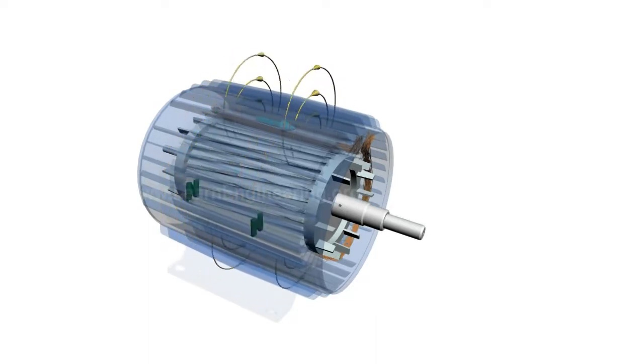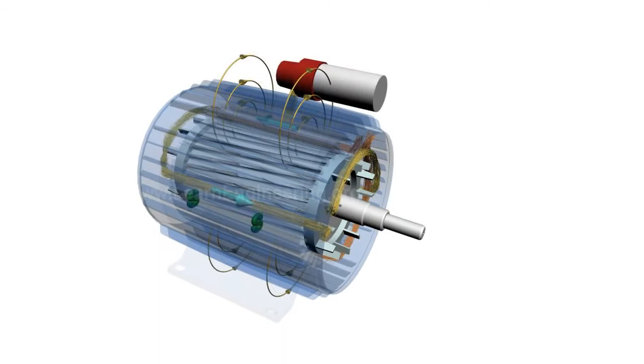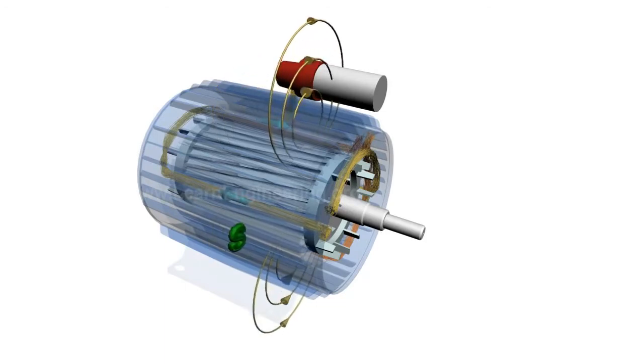The auxiliary winding-capacitor arrangement is used exactly for this purpose. Auxiliary winding also produces two oppositely revolving magnetic fields. One of them will cancel the RMF of main winding and the other will get added up.